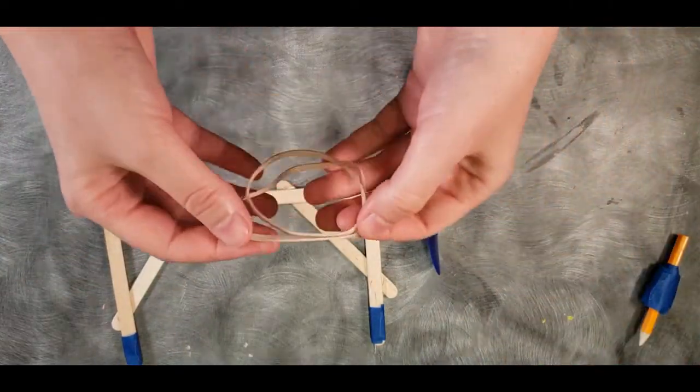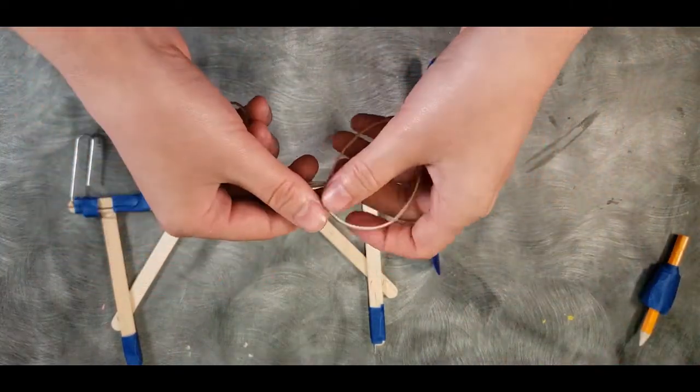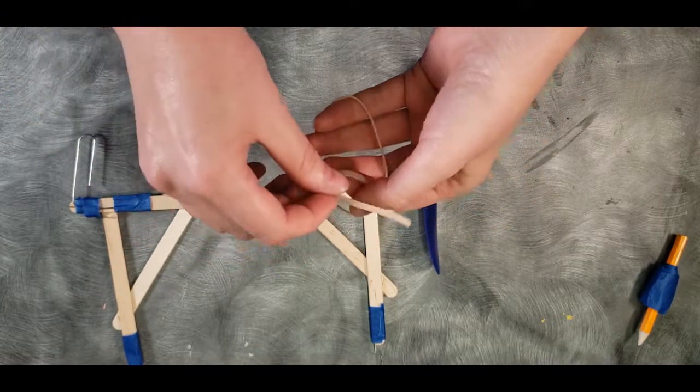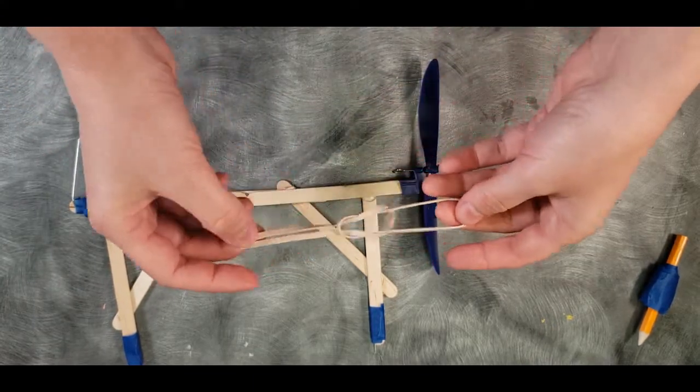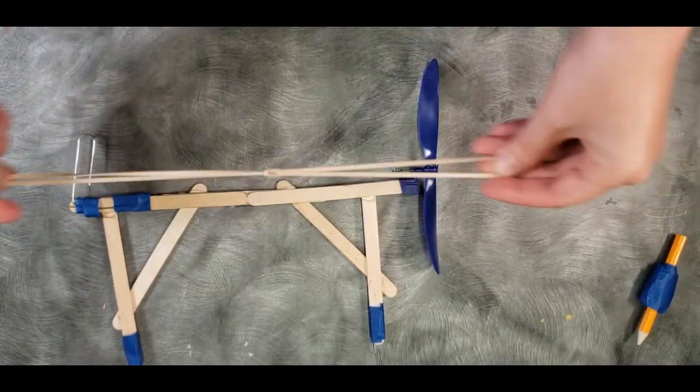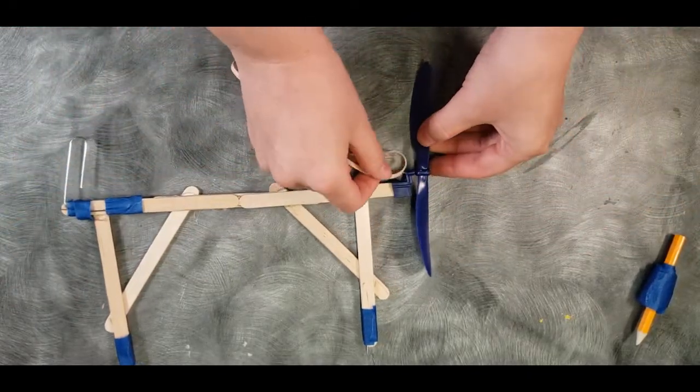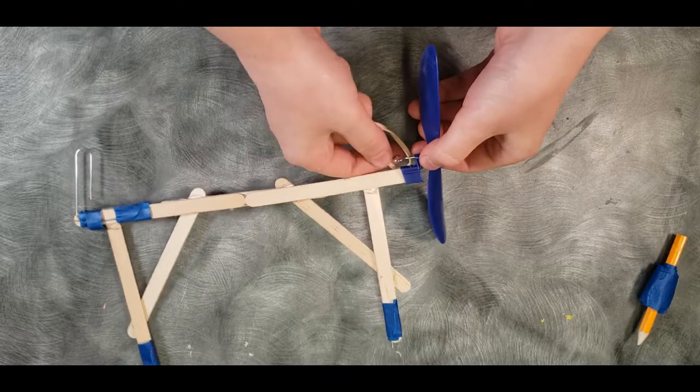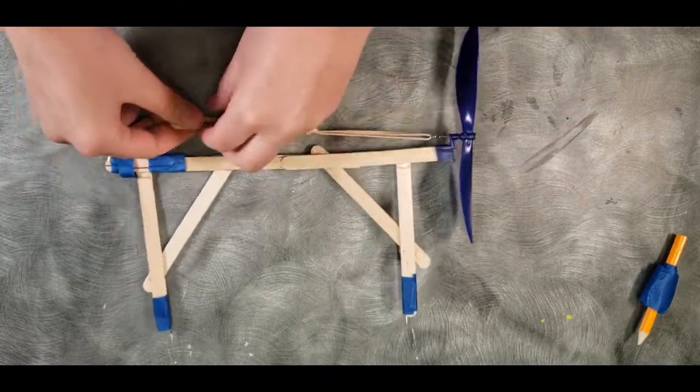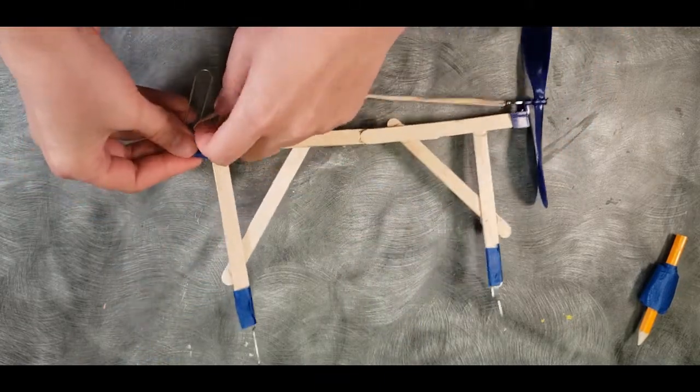We'll take two rubber bands and tie them together. Slip that through there. Attach at this end, and attach at this end.